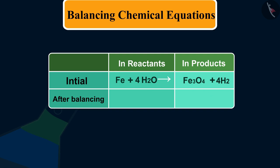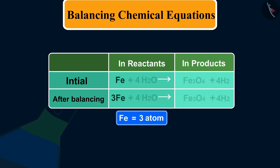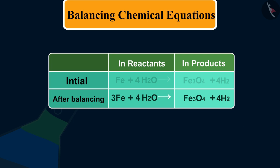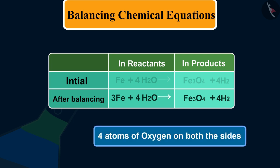Now to balance iron on the left side we take three atoms of iron. Finally, let us examine this balanced equation: there are three atoms of iron Fe, eight atoms of hydrogen H, and four atoms of oxygen O on both the sides.